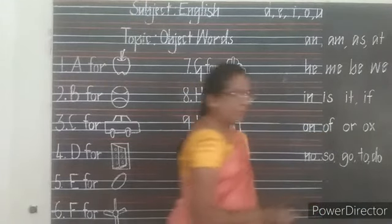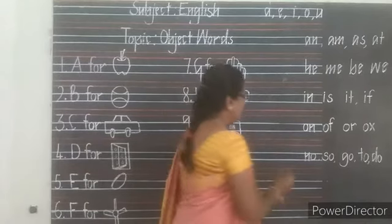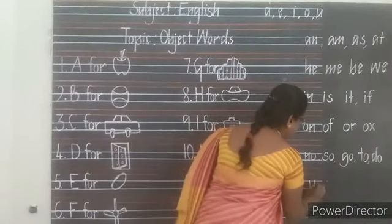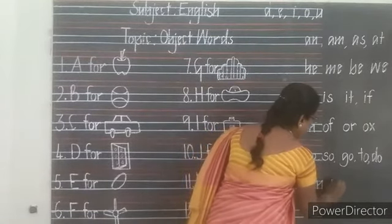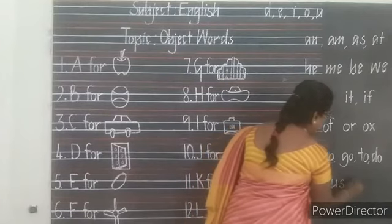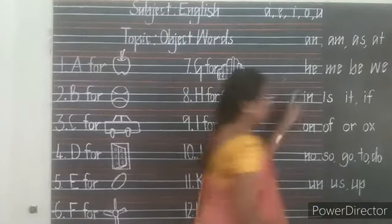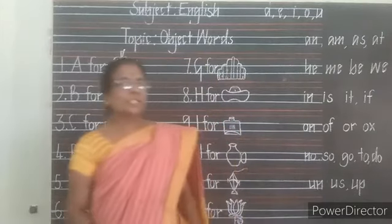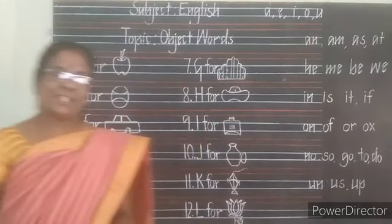Next, by using U: U-N, un; U-S, us; and U-P, up. And these are the two-letter words we have learnt in the previous class.